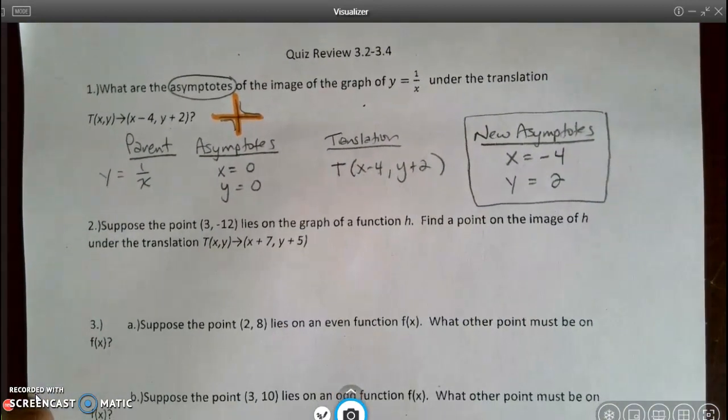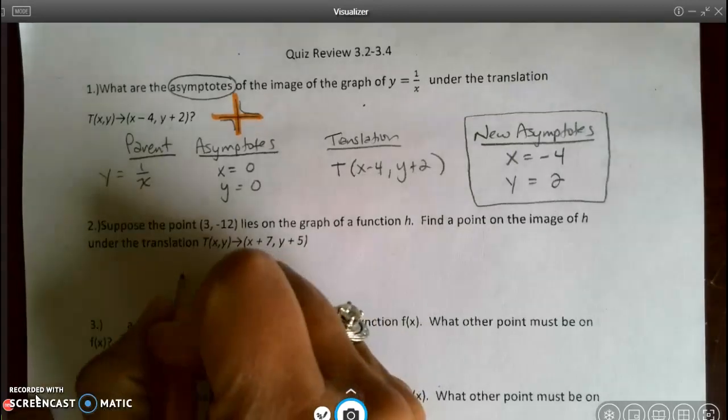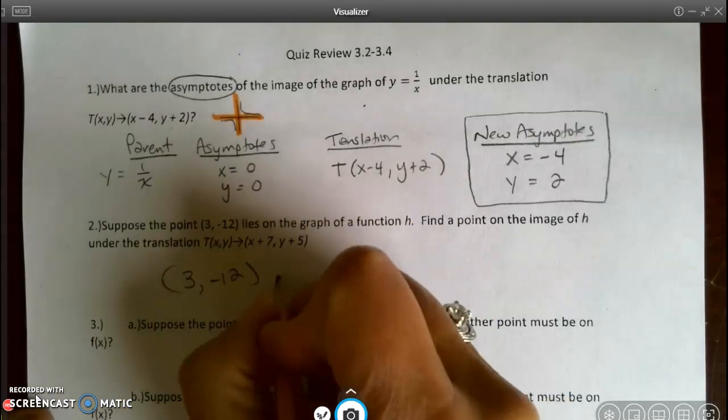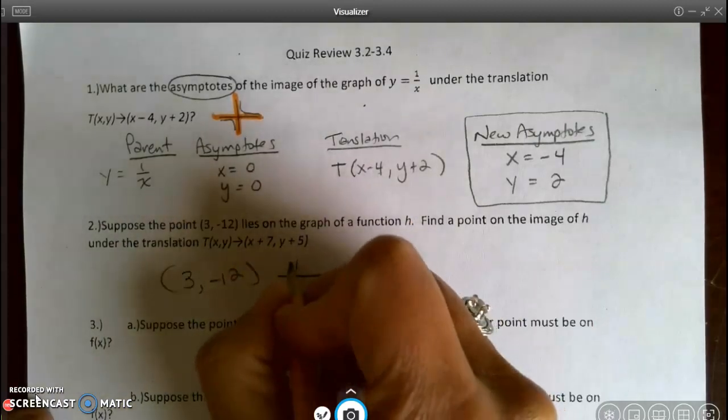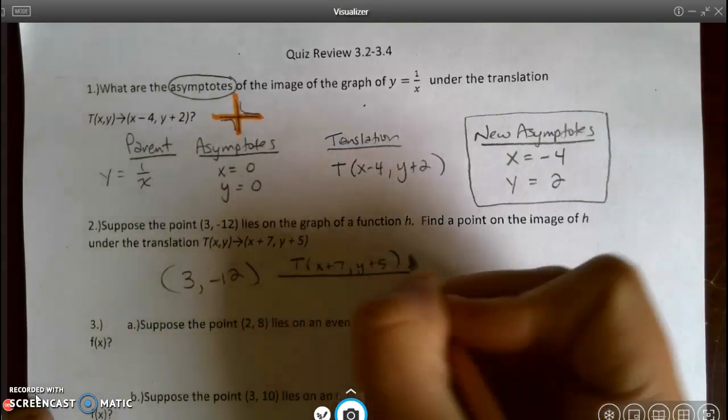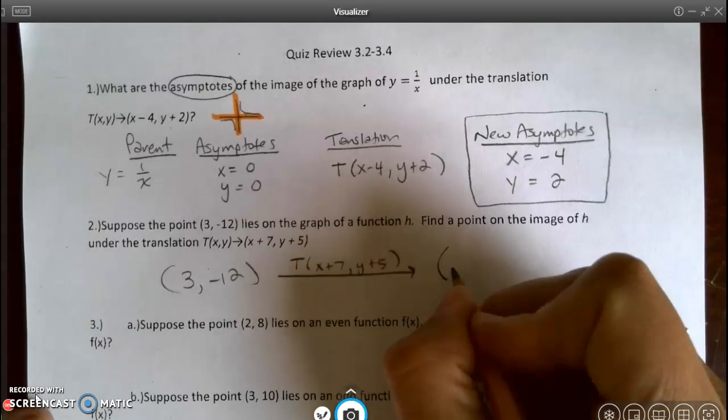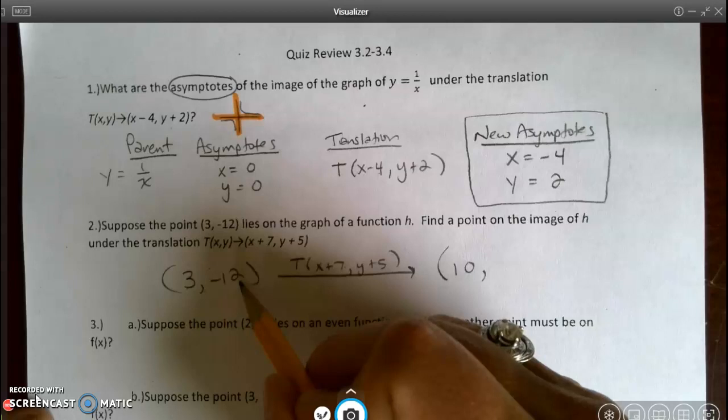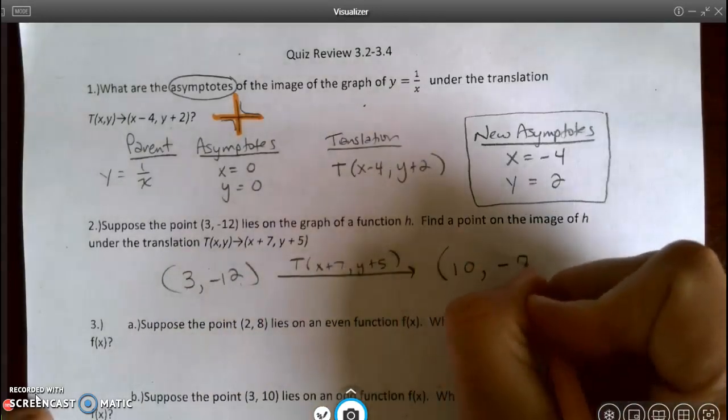For number 2, it says suppose the point (3, -12) lies on the graph of a function h. Find a point on the image of h under the translation. I start with (3, -12), and I'm going to translate it. My rule is x plus 7, y plus 5. So my new ordered pair is going to become (10, -7), because 3 plus 7 is 10, and y, I'm going to add 5, so I get negative 7.